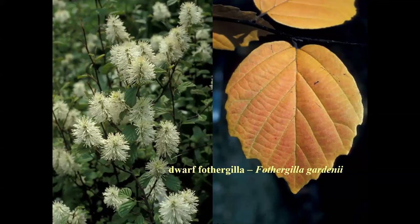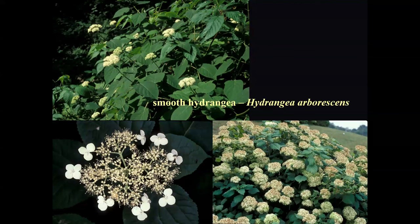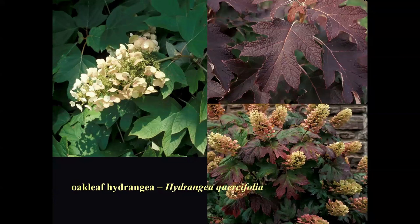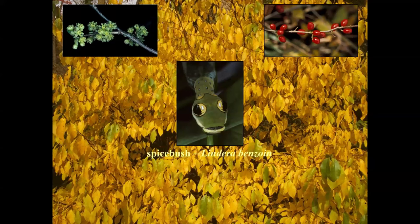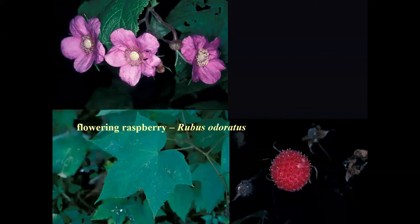Dwarf fothergilla — we have it on the north side of our house under an eave and it probably never gets a minute of direct sunlight, yet beautiful in flower. It's native to the Mid-Atlantic region and the Carolinas. Witch hazel — our native witch hazel. Smooth hydrangea — the big leaf hydrangeas, oakleaf, and smooth are the shade plants; the paniculate hydrangea is not shade-tolerant. The oakleaf hydrangea — I've seen it in some of the darkest, deepest gorges, so cool with that big white flower head in such a dark setting. Spice bush — eaten by the spice bush swallowtail; another plant that flowers around April 1st. Rosebay rhododendron — native to upstate New York. Flowering raspberry is beautiful in deep shade. Bladdernut. Red buckeye — I saw 15 hummingbirds on one red buckeye at the Cornell Plantations.